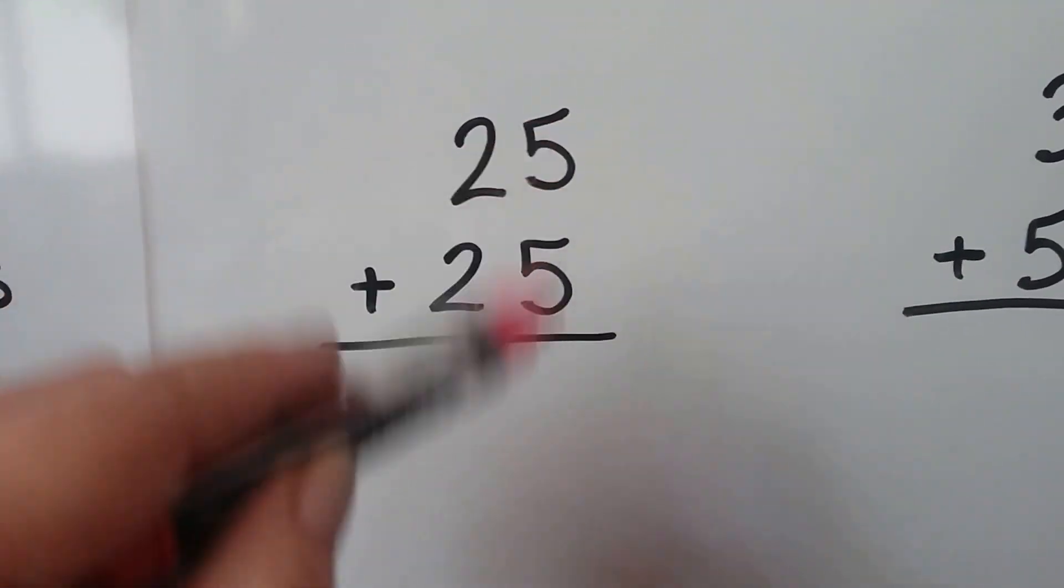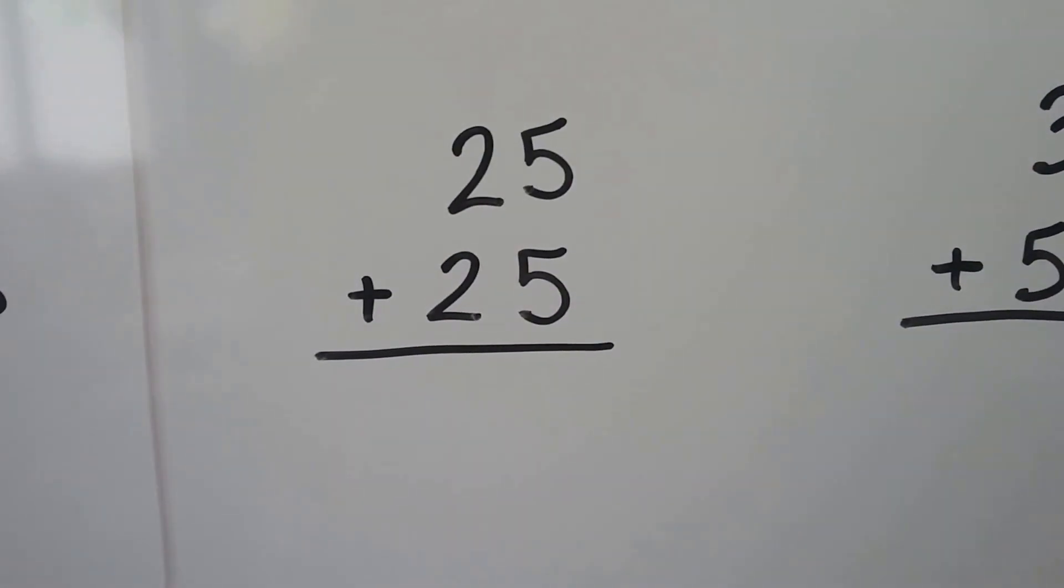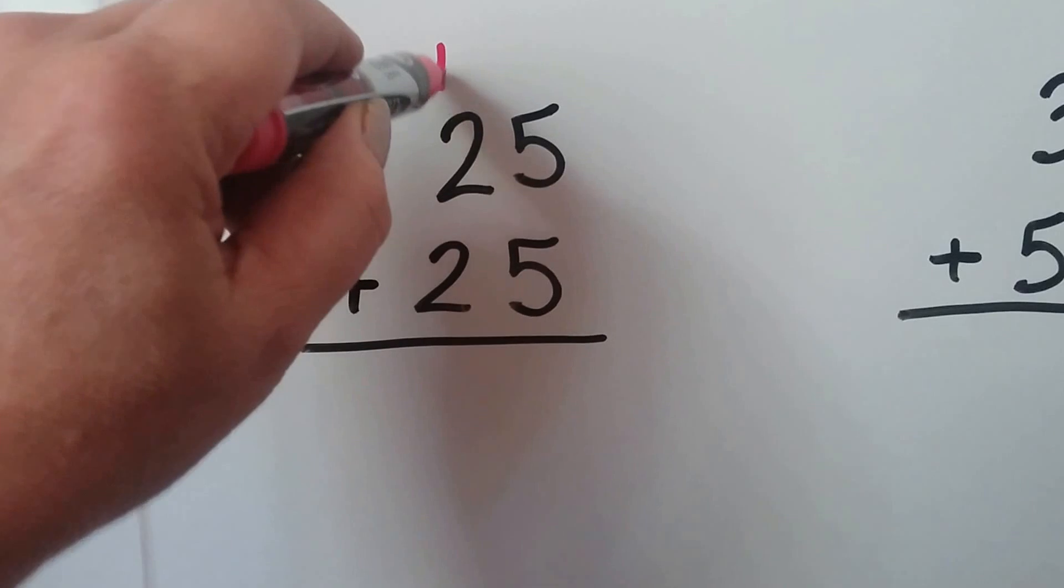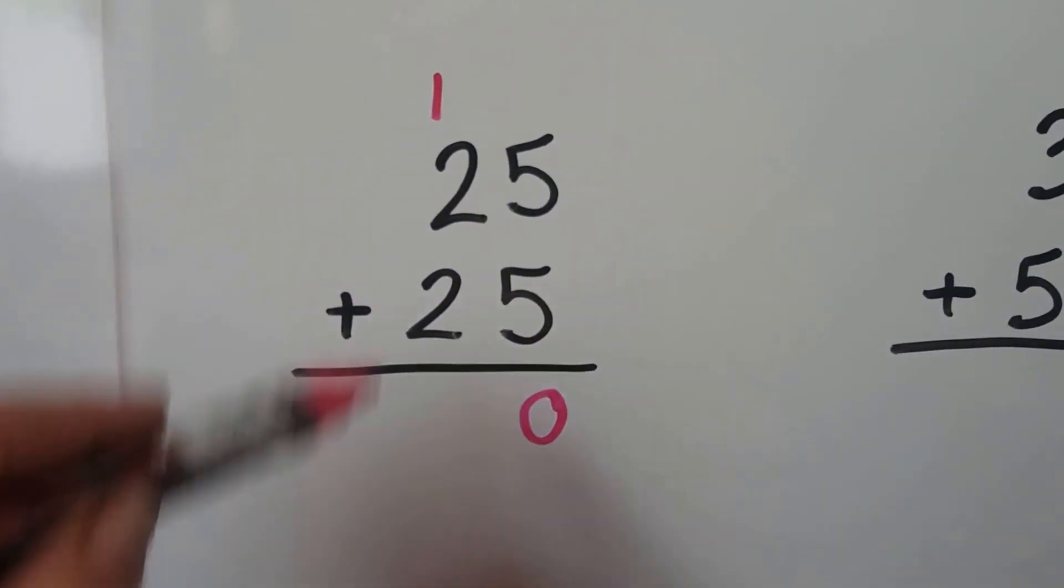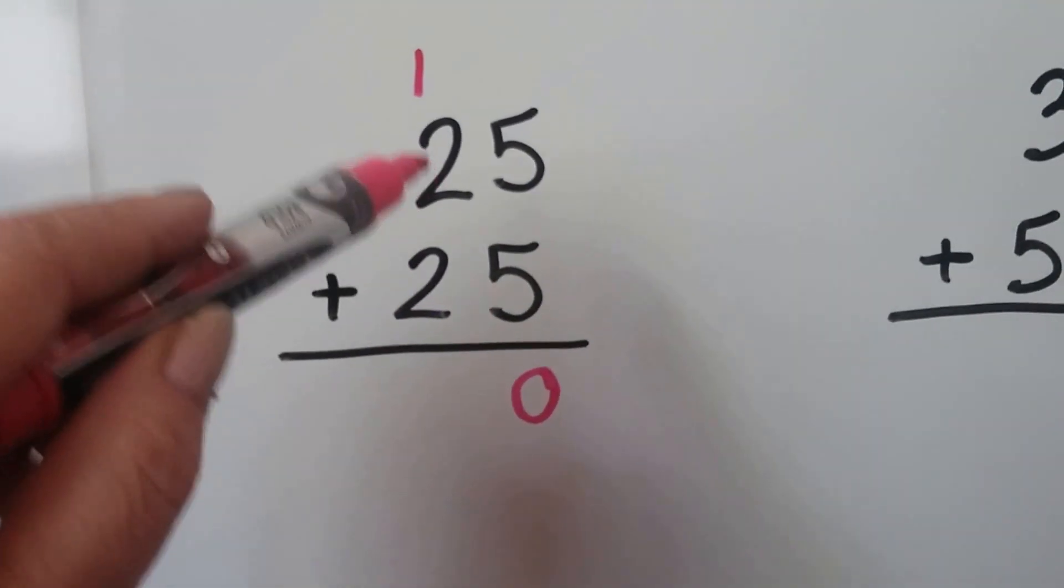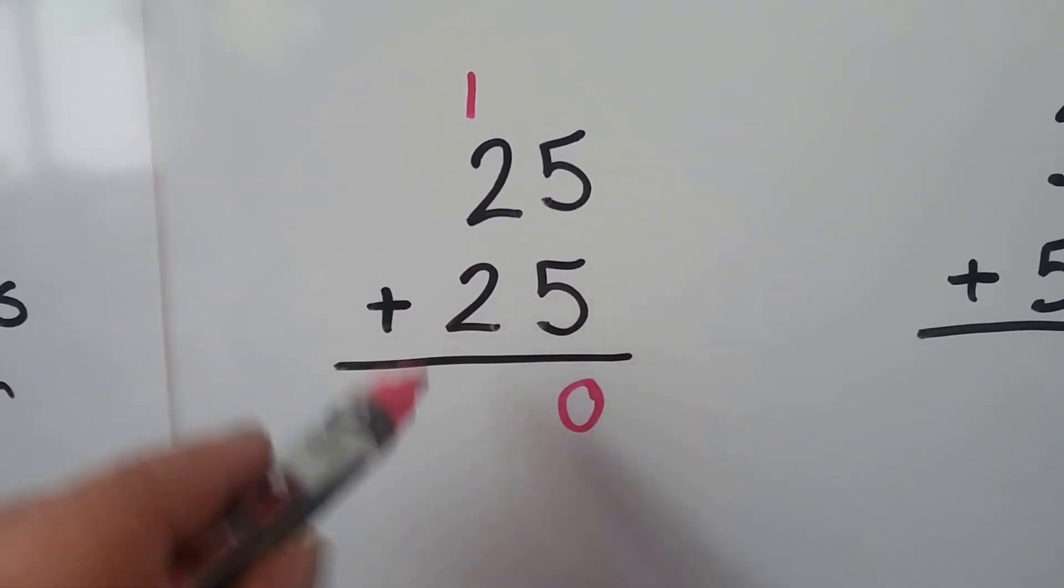We'll start with the ones place. 5 plus 5 is 10, right? That's a double. Put the 1 there and the 0 here. We add the tens place. 2 plus 1 is 3, 4, 5.